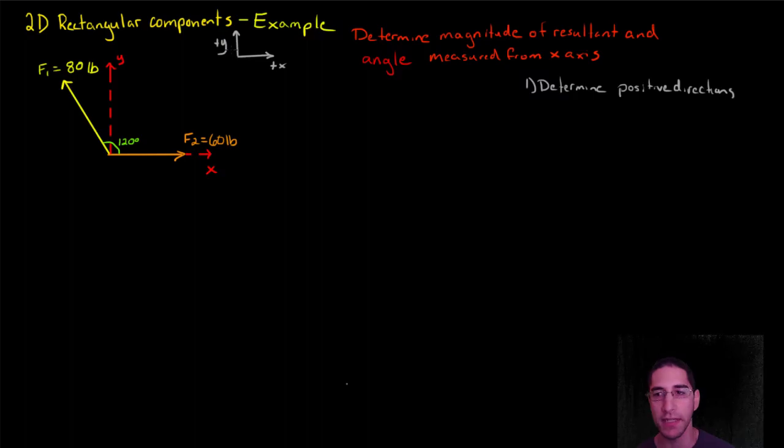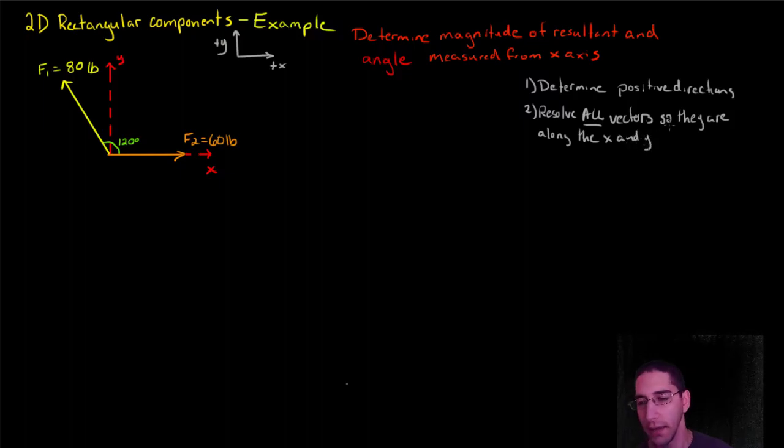So now I have a positive x and a positive y direction. My second step, I need to resolve all vectors so they are along the x and y directions. Let's look at the two forces I have. I have F1, which is in the x and y plane, so I'm going to need to resolve that. And I have F2, which is only along the x-axis, so that already is only with the x components.